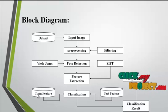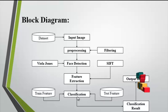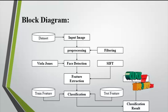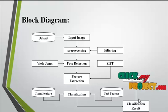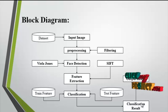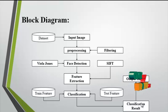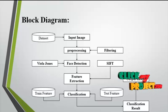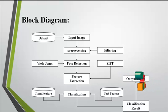Then classification is undertaken for both the train feature and the test feature. The combination of the train and test features gives the classification result. After classification, an ID is created for each person, and we process the ID details of each unique person. The result gives the details about the person present in the images.